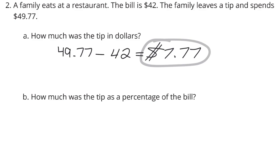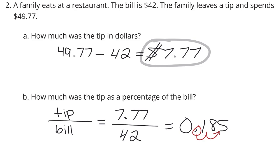Then, how much was the tip as a percentage of the bill? So, we're looking at the tip divided by the bill. Well, the tip was $7.77. The bill was $42. And when I take $7.77 and divide by 42, we end up with the decimal, $0.185. And, if I multiply by 100, in other words, move the decimal place over twice to the right, we get 18.5% for our solution.